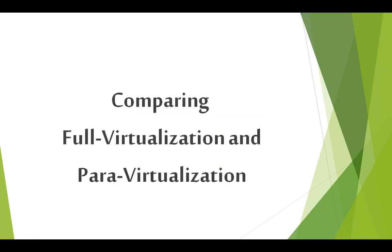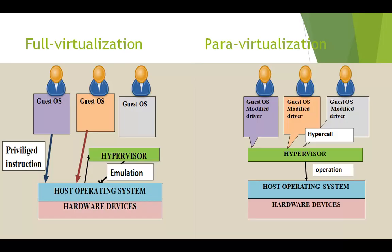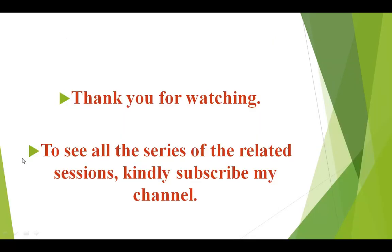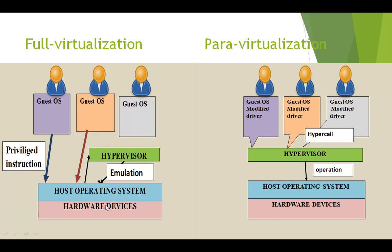Now let us compare full virtualization and para virtualization. In full virtualization, guest operating systems in separate virtual machines can directly communicate with the hardware by sending privileged system-level instructions. To fulfill these instructions, the hardware generates a trap to the hypervisor. The hypervisor then emulates the hardware device and returns the results to the respective guest operating system.